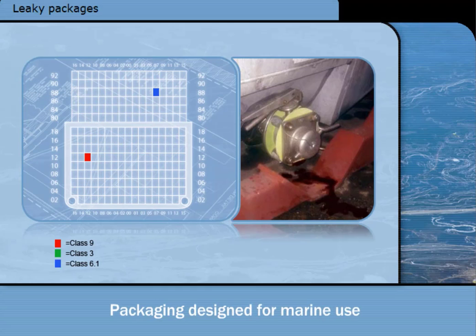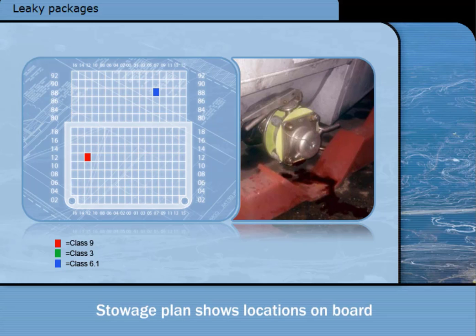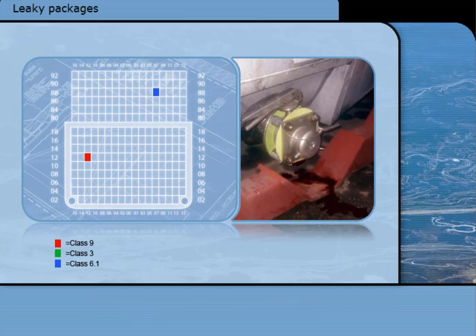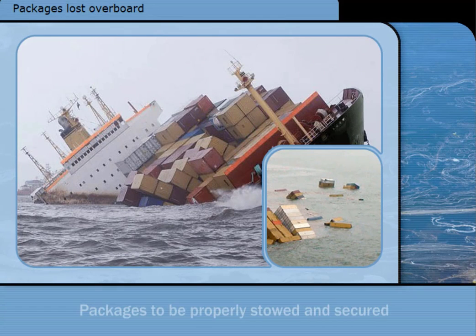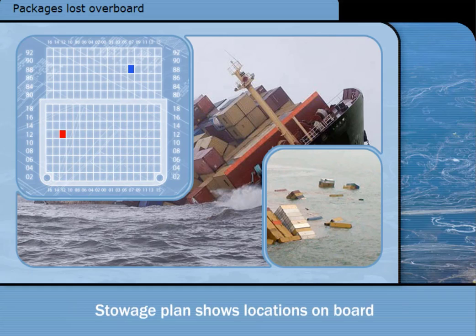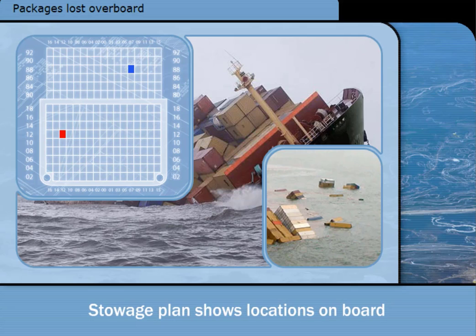To minimise pollution from leaky packages, Annex 3 requires packaging to be designed to minimise the risk of leaks. A stowage plan setting out the location of the harmful substances on board is to be made. This allows extra care to be taken to prevent damage, and for the crew to decide whether a leak from a package may be harmful. To reduce the risk of packages being lost overboard, packages of harmful substances are required to be properly stowed and secured so as to minimise the hazards to the marine environment. The ship must have a cargo stowage plan which identifies where harmful substances are, so that if packages are lost overboard, the crew can decide whether they contain harmful substances.